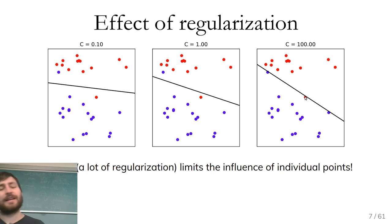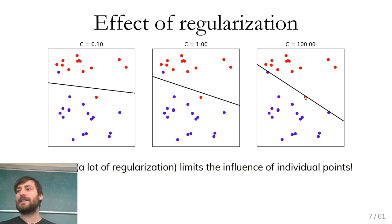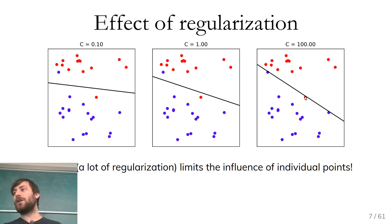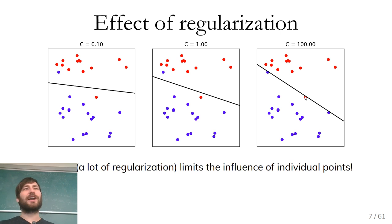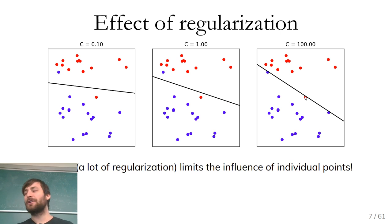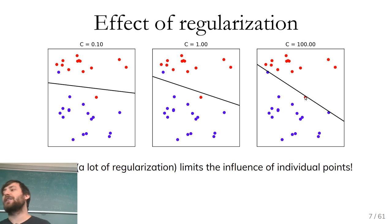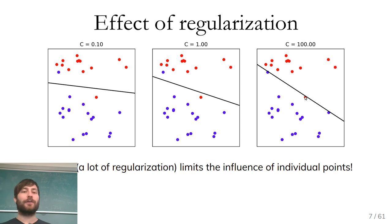This is the way I'd think about regularization in binary classification: you limit the amount of influence each individual point has. The left-hand side looks like a good model. The right-hand side — I would say — is probably overfit.